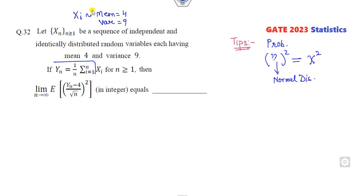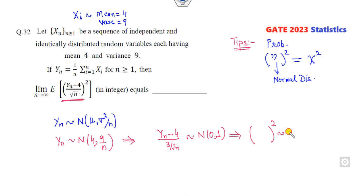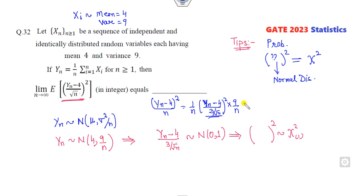What is given is the sample mean Y_n. It follows the normal distribution with mean mu and variance sigma squared by n. So the mean is 4, variance is 9 over n. Thus Y_n follows normal(4, 9/n). Your target is to convert into the scale: Y_n minus 4 divided by 3 over root n follows normal(0,1). Therefore the square of this follows chi-square with 1 degree of freedom. This is my chi-square of 1.